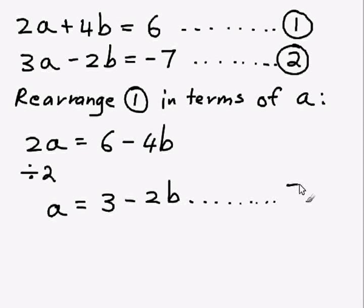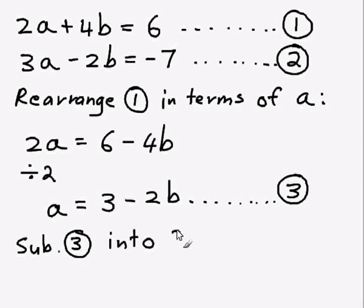So we have rearranged equation 1 in terms of a, and I'm going to call this new equation equation 3. Now what we can do is we can use this new equation 3 and substitute it back into the other equation we haven't used, which is equation 2. So in equation 2 whenever I see an a I'm going to write 3 minus 2b since I know that's what a equals.